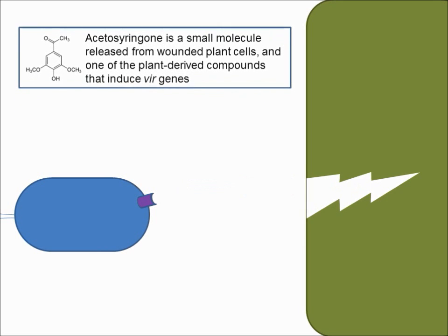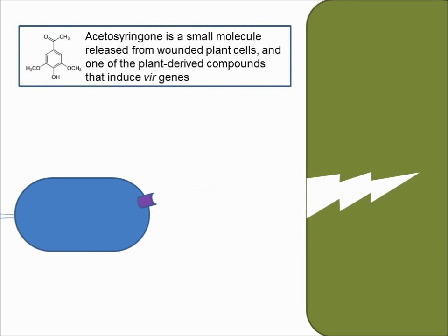Among the molecules released from the wounded plant tissue is the phenolic molecule Acetoceryngone, and this molecule binds to a receptor on the bacterium encoded by the bacterium's virulence A gene.